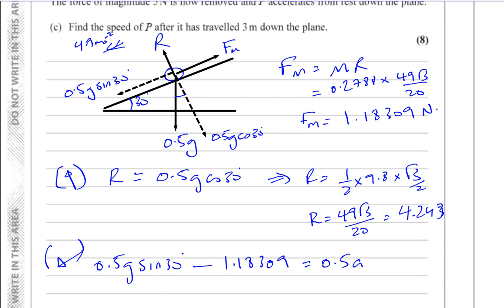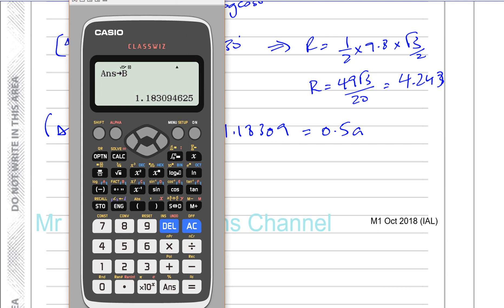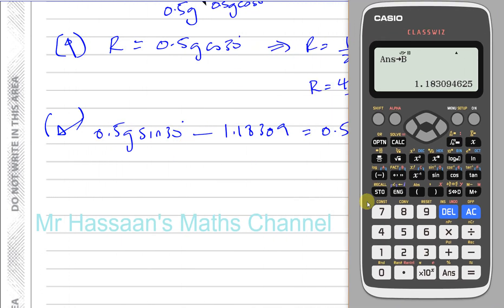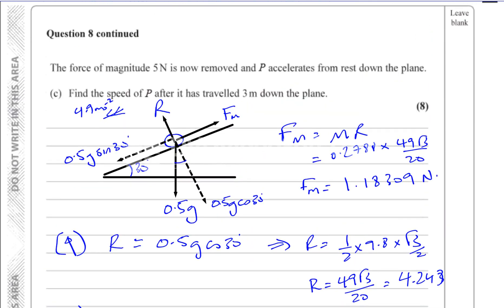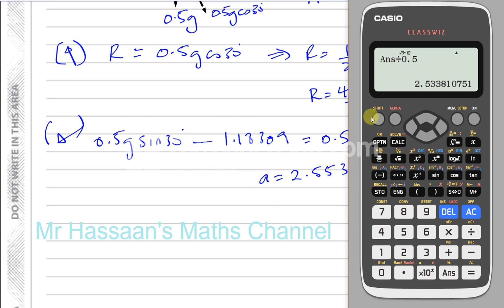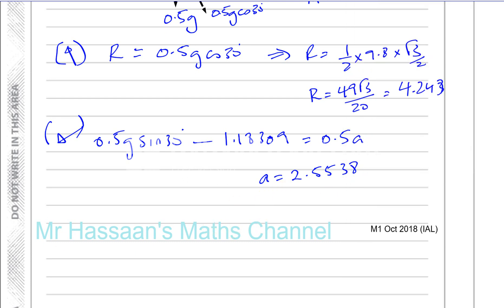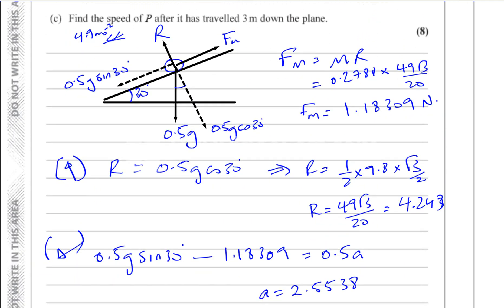Now resolving parallel to the plane: 0.5g·sin30 minus F_max equals 0.5 × a. So a equals (0.5 × 9.8 × sin30 minus 1.1831) divided by 0.5, giving a = 2.5538 m/s² down the plane. I'll store that as C.